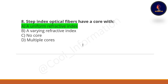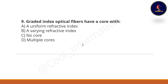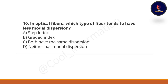Next question: Graded index optical fibers have a core with what — a uniform refractive index, a varying refractive index, no core, or multiple cores? The correct option is a varying refractive index.